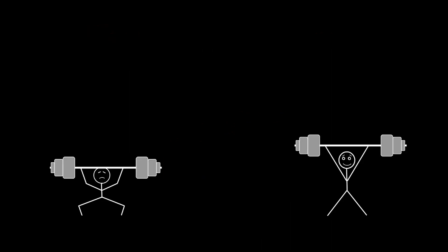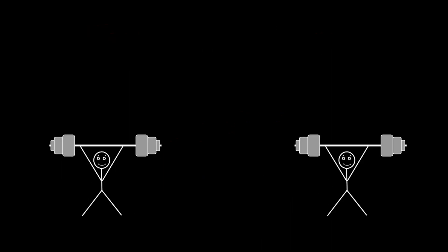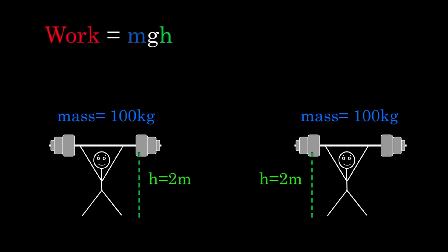Both weightlifters are giving their weights the same amount of gravitational potential energy. They both lift them 2 meters and the masses are 100 kilograms each. Plug those into the formula for gravitational potential energy and you find that the work done by each weightlifter is 1,960 joules.